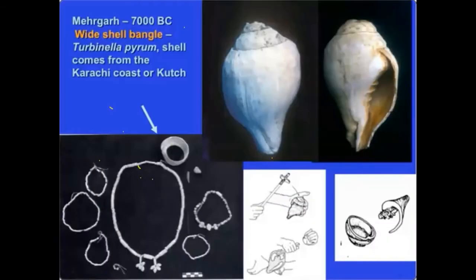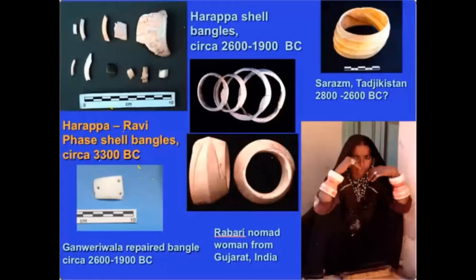We also see the presence of large bangles. Mehrgarh is the first place in South Asia where we have evidence for the use of a bangle — a circlet used as an ornament on the wrist. This was made from the shank of Turbinella pyrum, a shell only found in South Asia, and it becomes diagnostic of later cultural traditions in the region. The difference between thin bangles and thick bangles is important: wide bangles are made from one shell, whereas thin bangles are made by slicing a shell using special technology.